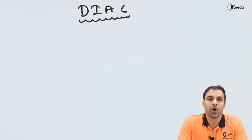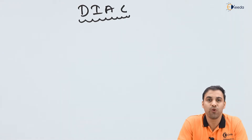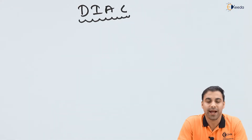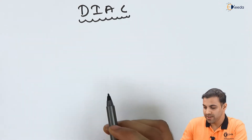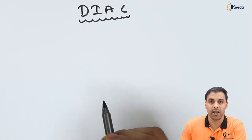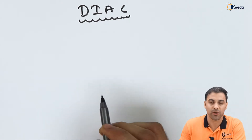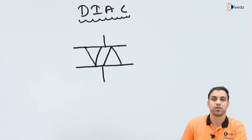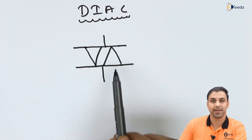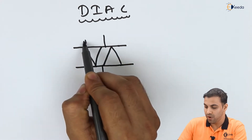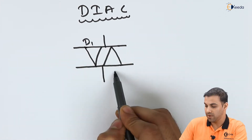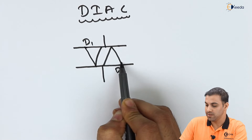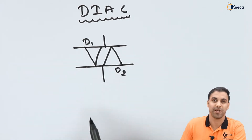Now similarly, let's talk about DIAC. DIAC is nothing but the combination of two diodes. So let's draw the symbolic diagram. DIAC is a combination of two diodes, and it looks like this. Let D1 be the first diode and D2 be the second diode. This is how the DIAC is constructed.